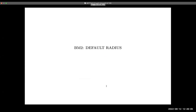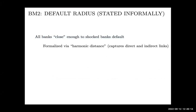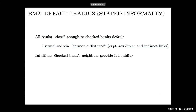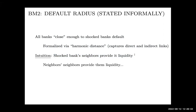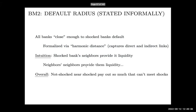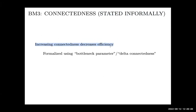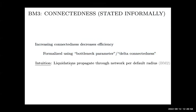Two additional benchmark results from AOT: first, all banks close enough to a shocked bank — measured by harmonic distance capturing both direct and indirect links — will default, as the shock bank's neighbors provide liquidity that gets sucked into the shocked bank, causing them to fail. Second, increased connectedness decreases efficiency — formalized using AOT's bottleneck parameter delta — because liquidations propagate through the network via the default radius.